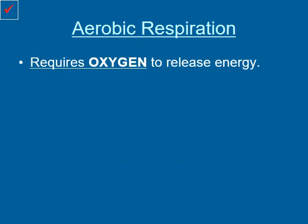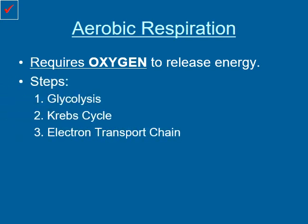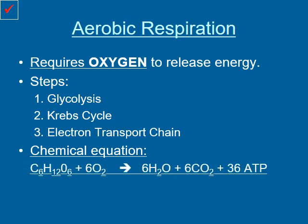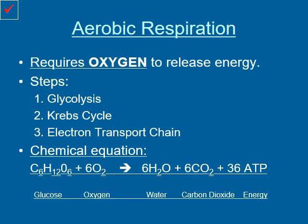Aerobic respiration requires oxygen to go ahead and release energy, and it has three primary steps. It starts off with glycolysis, then moves to the Krebs cycle, and finishes up inside the electron transport chain. The chemical equation for aerobic respiration is as follows: C6H12O6, which is glucose, plus 6O2 — so our reactants are glucose and oxygen. At the end of the process, our products are 6H2O (six molecules of water), 6CO2 (six molecules of carbon dioxide), and a net gain of 36 molecules of ATP, or usable energy.